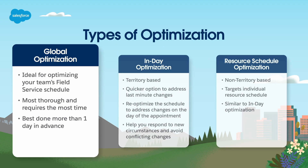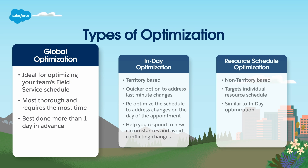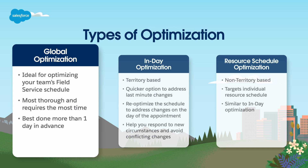Global optimization is ideal for optimizing your team's field service schedule for one or more service territories across a specified range of days. Global optimization is the most thorough and powerful option, which also takes the most time and produces the most optimal schedule. This is best done more than one day in advance.